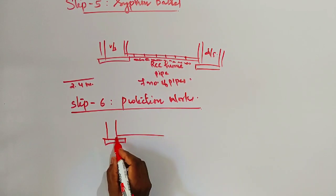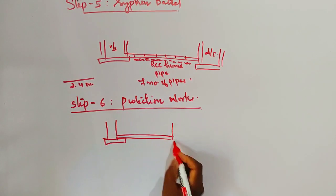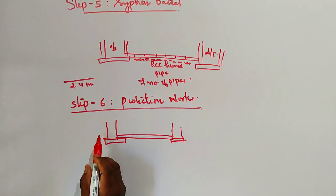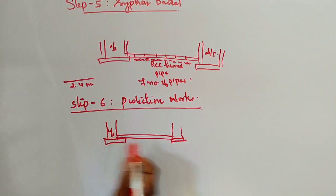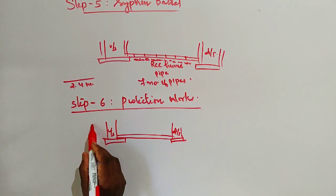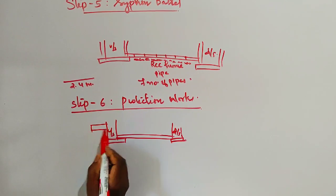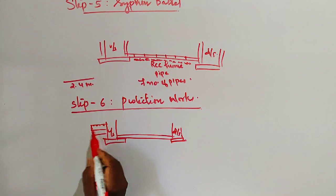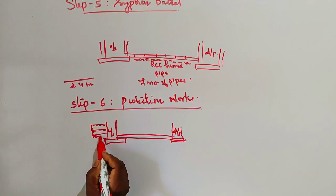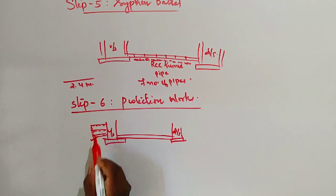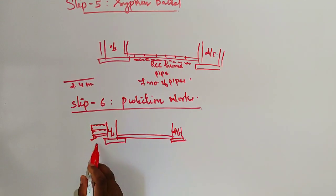This protection includes the upstream well, pipe, and downstream well. The protection work consists of apron and revetments for both upstream and downstream sections.